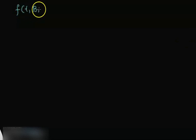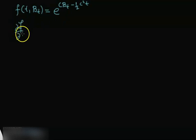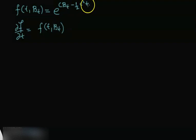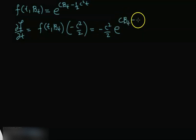Let's get started. We consider the function f(t, B_t) = e^(c·B_t − ½c²t). Before I apply Itô's Lemma, I need to compute its partial derivatives. The partial derivative with respect to t is going to be the same function f(t, B_t) times the differential of the exponent, which gives −c²/2 · e^(c·B_t − c²t/2).